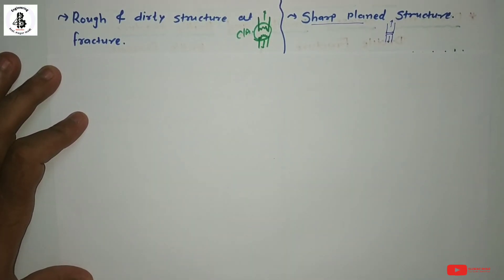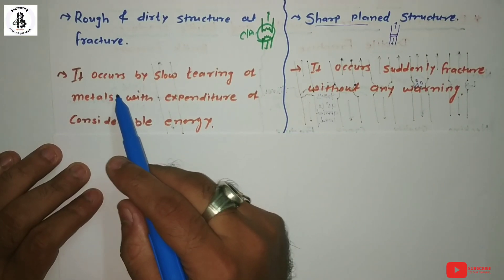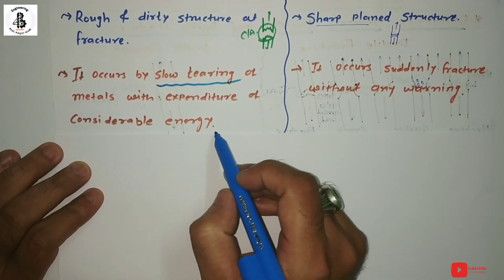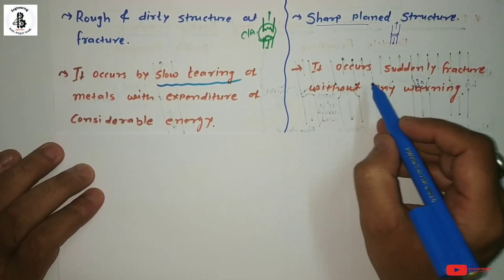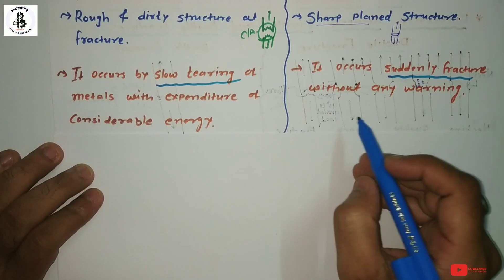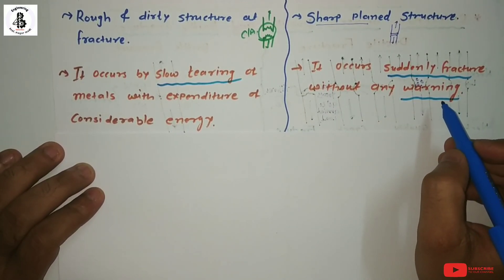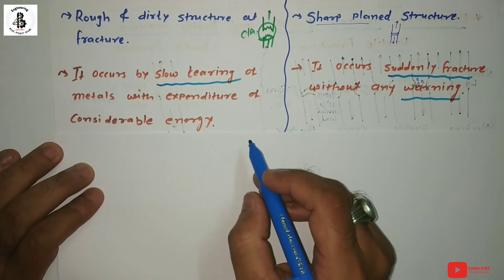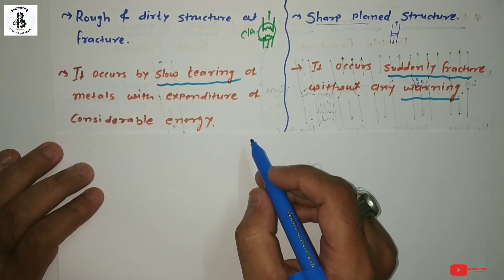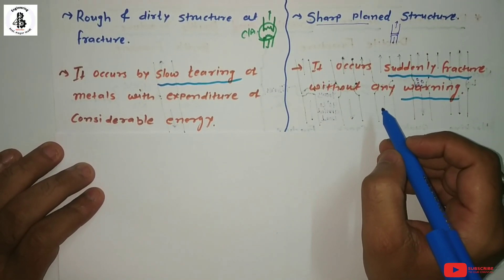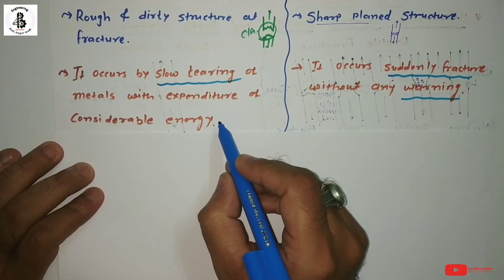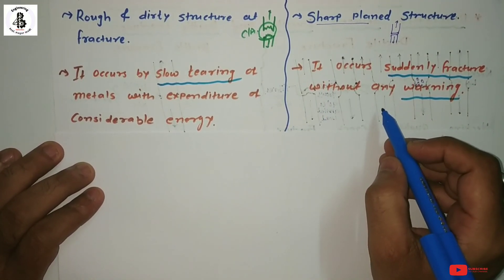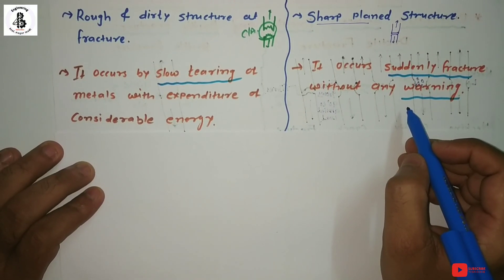In ductile fracture, failure always occurs by slow tearing of the metal with expenditure of considerable energy. In brittle fracture, failure occurs suddenly without any kind of warning — this makes it dangerous for engineering applications. Ductile materials fail after elastic deformation, then plastic deformation, and then failure with warning. Brittle materials fail suddenly without any warning.